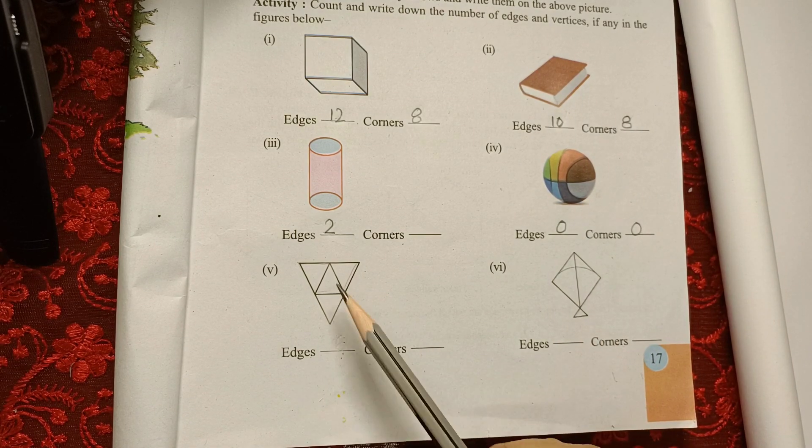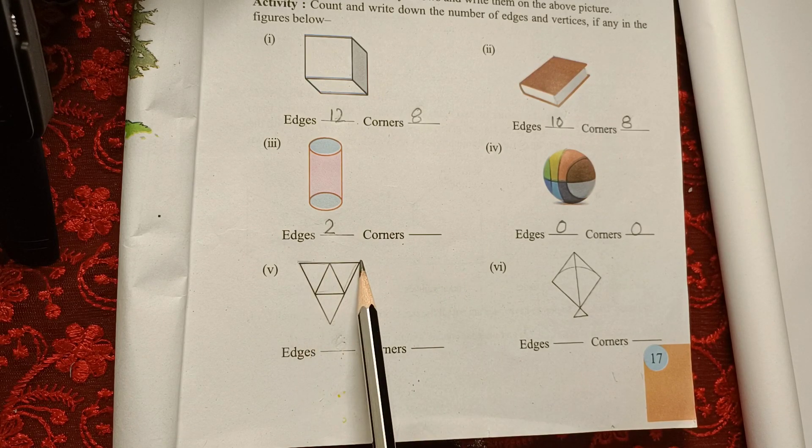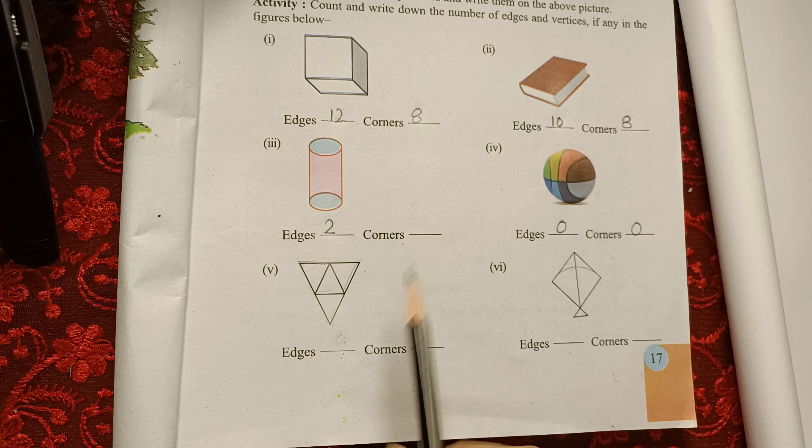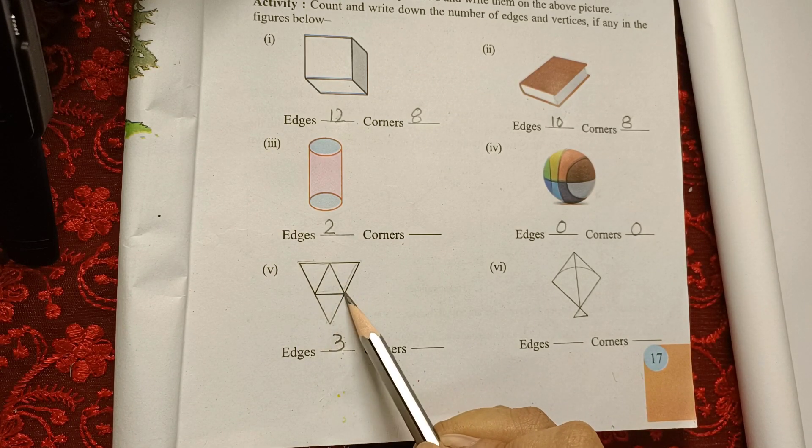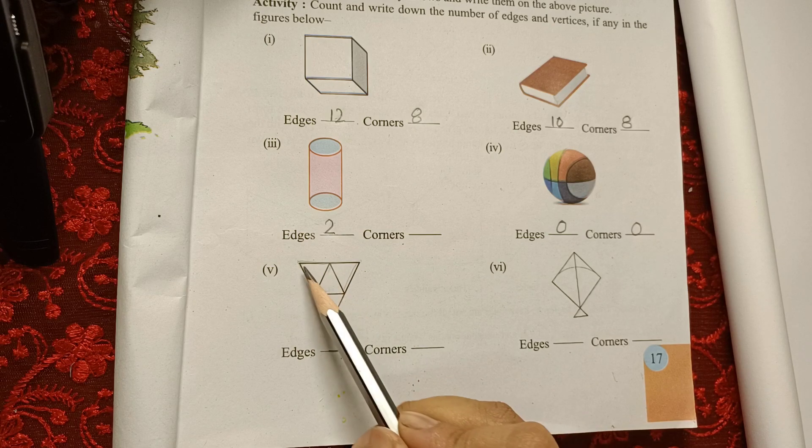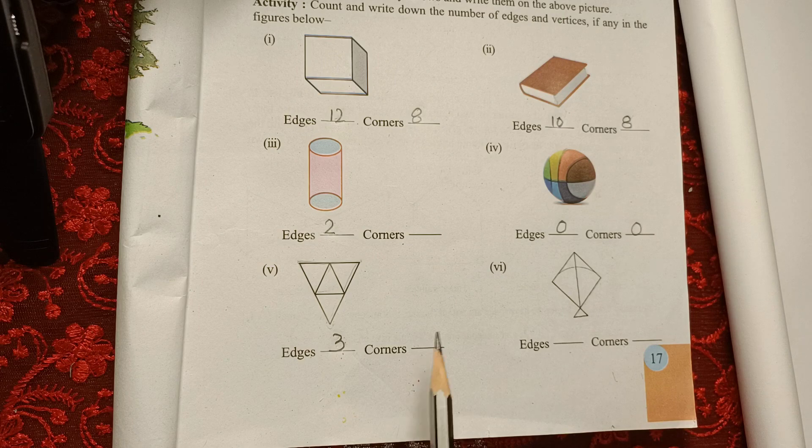Now this is another figure just like a triangle, so how many edges are there? 1, 2, and 3, so we have 3 edges. We cannot count this which is in the middle because it is not the edge. Just like the boundary is called the edge.